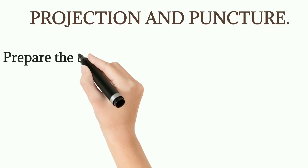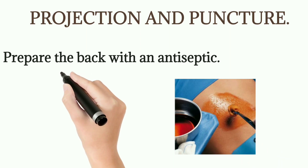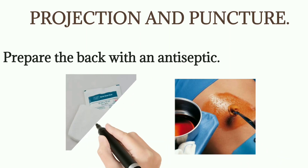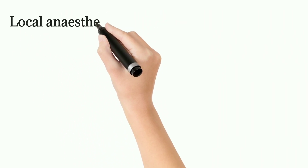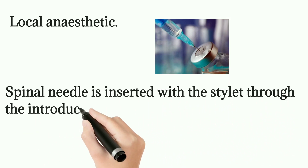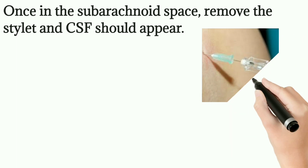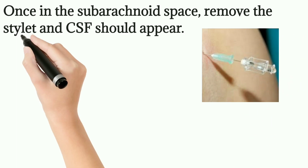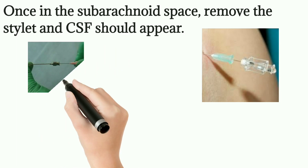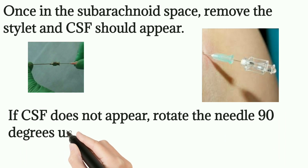Projection and Puncture: Prepare the back with antiseptic solution — paint the entire back region and allow it to dry. Infiltrate local anesthetic into the skin. Insert the spinal needle with the stilette through an introducer into the chosen interspace. Once in the subarachnoid space, remove the stilette — CSF should appear as a backflow. If CSF does not appear, rotate the needle 90 degrees until it appears.